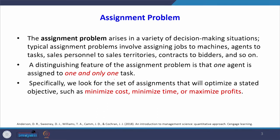The assignment problem arises in a variety of decision-making situations. Typical assignment problems involve assigning jobs to machines, agents to tasks, sales personnel to sales territories, and contracts to bidders. There are many applications of the assignment problem. A distinguishing feature is that one agent is assigned to one and only one task — that is the key assumption.